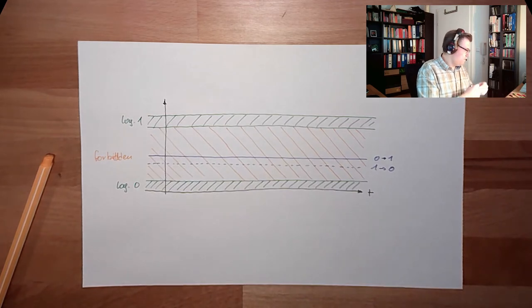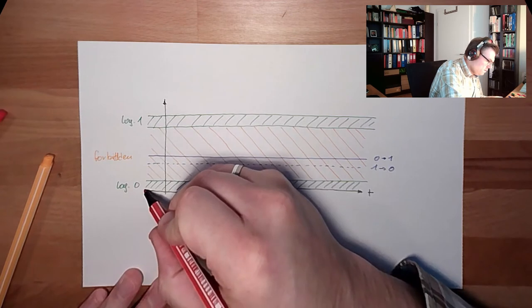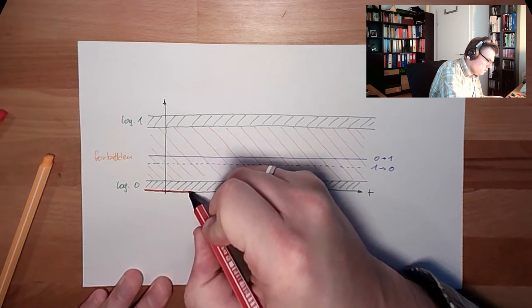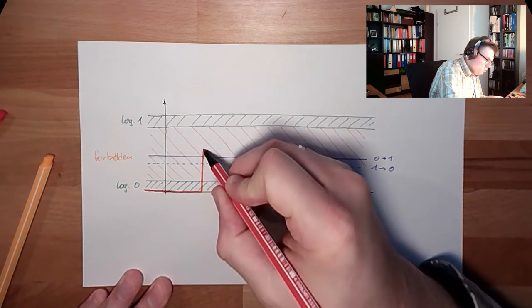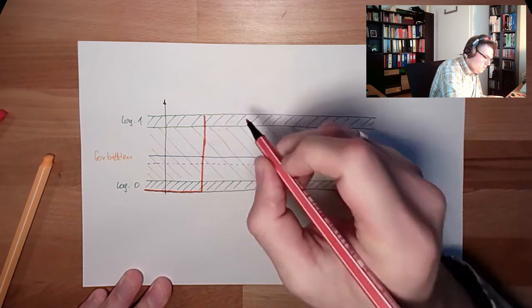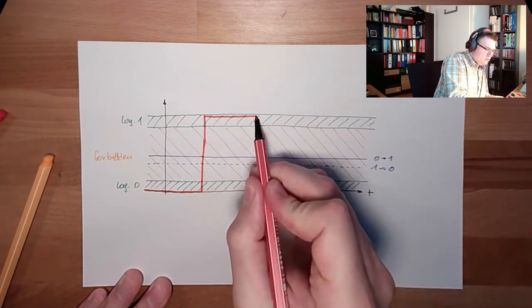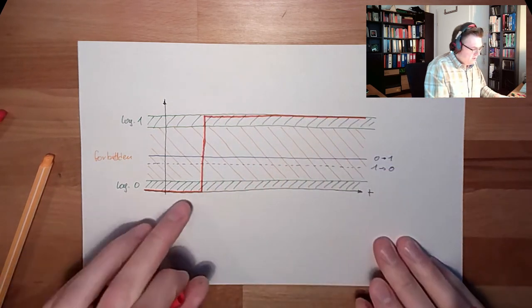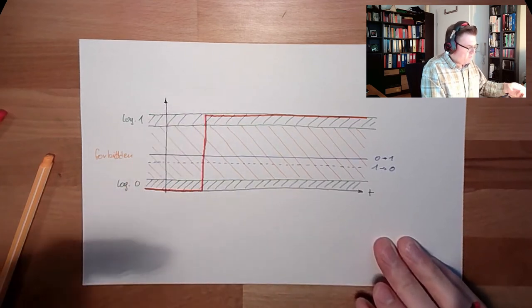If we do have things like that, sharp edges, we are switching exactly at this point in time from zero to one.